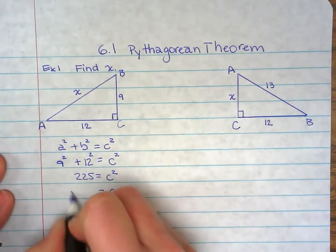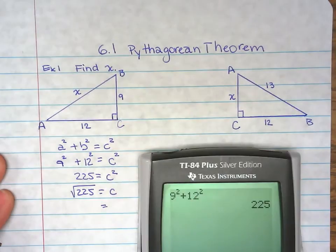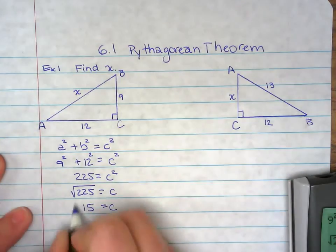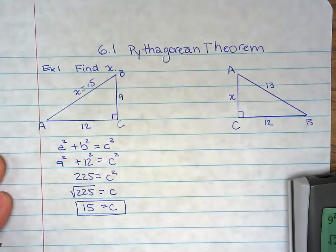So to find c, we can take the square root of 225. And the square root of 225 is 15. So c is 15, and that's the x we were looking for.